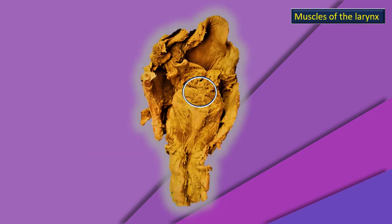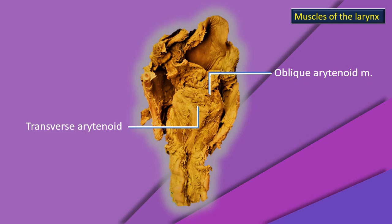Now let's check the same details on an actual dissected specimen. Concentrate on that circle right above the cricoid lamina — you can see the posterior cricoarytenoid muscles clearly. Just above that you can see the oblique arytenoid, with the criss-crossing of its fibers clearly visible. And below that, transversely running fibers — that is the transverse arytenoid.